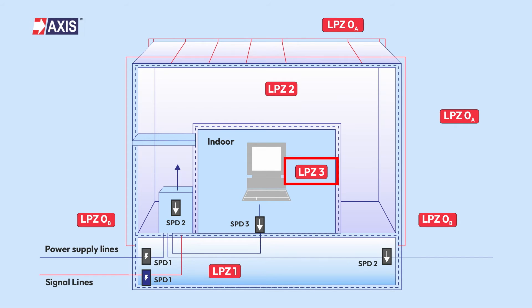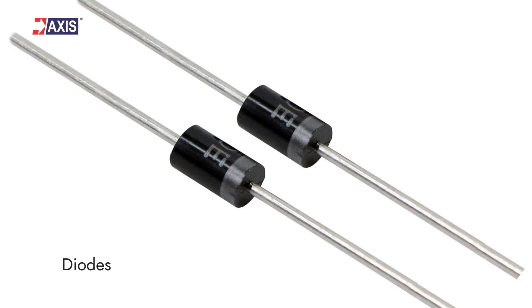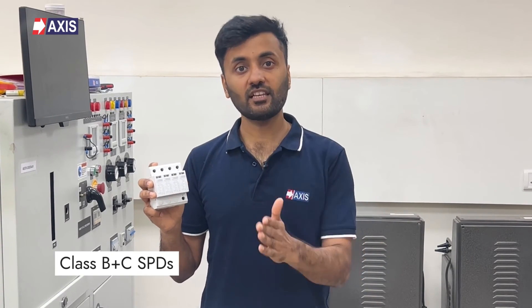Type 3 SPDs, also known as class D SPDs, are recommended in LPZ3 areas. These SPDs have a low energy handling capacity and are installed at the endpoints of the electrical system, such as your socket, so they can respond quickly during a surge. Materials like diodes are used in their construction, allowing them to manage surges safely. Type 1 plus 2 SPDs, also known as class B plus C SPDs, are installed in panels where cables enter from outside a building. Made using a combination of MOVs and spark gaps, they are more economical compared to Type 1 SPDs.